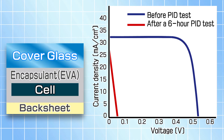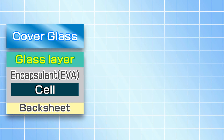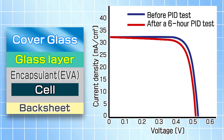These figures show the photovoltaic characteristics of PV modules before and after a PID test. The PV modules were prepared with and without the internal glass layer. In the case of PV modules without the glass layer, the generated power voltage was drastically reduced after a 6-hour PID test. In contrast, the generated power voltage of PV modules prepared with the glass layer showed almost no characteristic change, even after a 6-hour PID test.